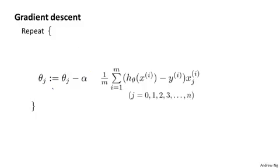Previously, we were using gradient descent for the original cost function without the regularization term, and we had the following algorithm. For regular linear regression without regularization, we will repeatedly update the parameters theta j as follows for j equals 0, 1, 2, up through n.